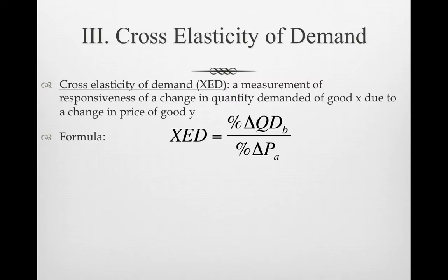The formula is almost the same as PED, except instead of percentage change in QD over percentage change in P, we've got XED: percentage change in QD of good B over percentage change in price of good A. So we're looking at how two goods are related. You'll want to write down both the formula and the definition.